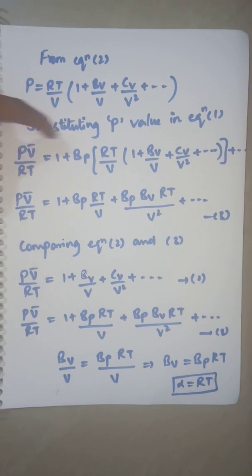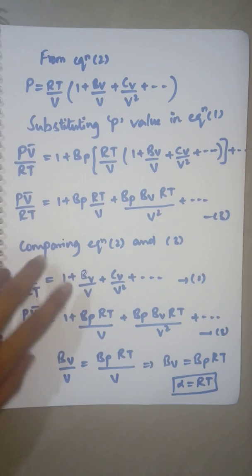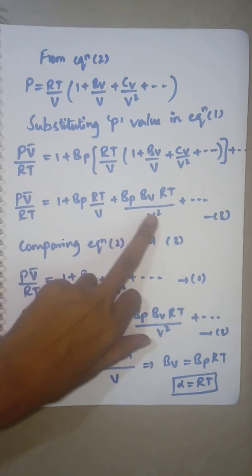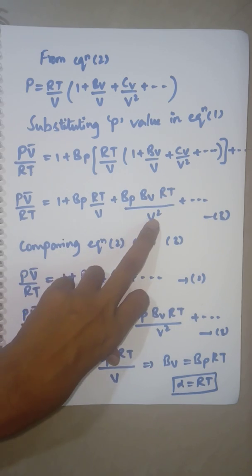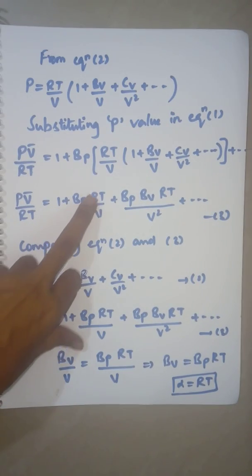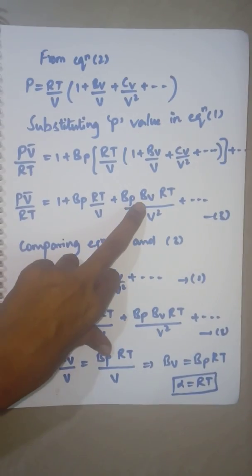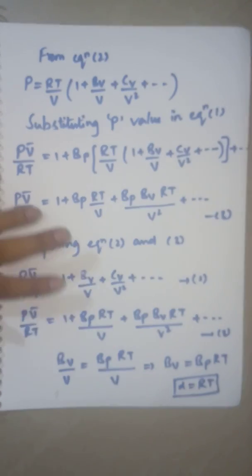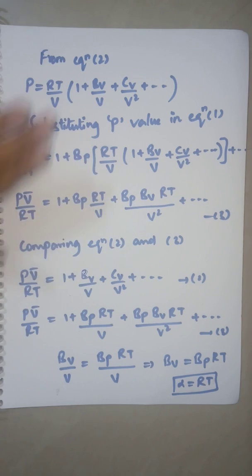PV/RT is 1 + BP, just multiply this with each term. We'll neglect the higher terms and consider only the first and second order equation. So 1 + BP·RT/V + BP·BV·RT/V². We just need relation between BP and BV.